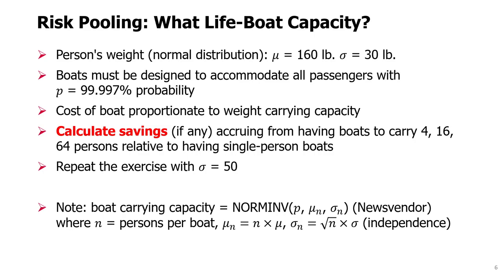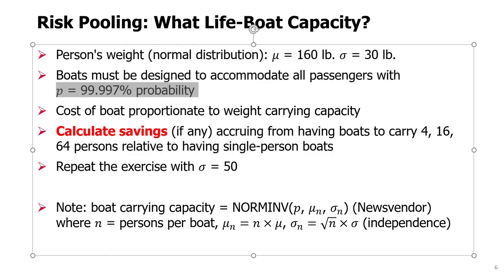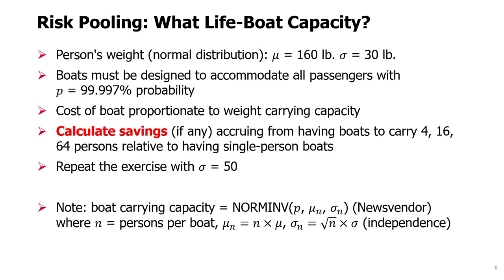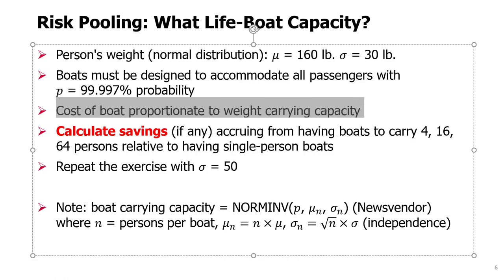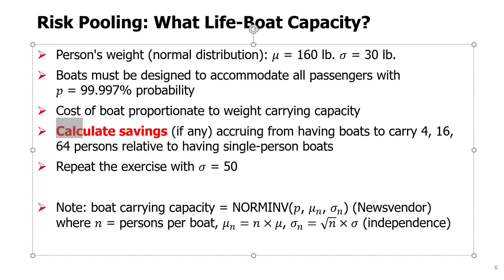We assume a person's weight is normally distributed with mean 160 pounds and standard deviation 30 pounds, and we assume that boats must be designed to accommodate all passengers with a very high likelihood — P 99.997%. The cost of the boat is assumed to be proportionate to its weight-carrying capacity. We want to calculate savings from having boats to carry 4, 16, or 64 persons relative to single-person boats.